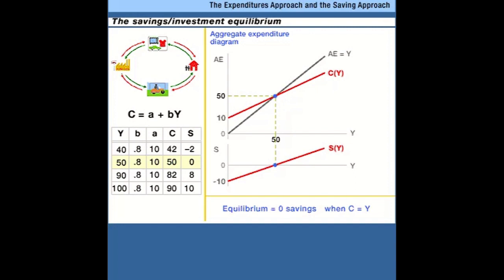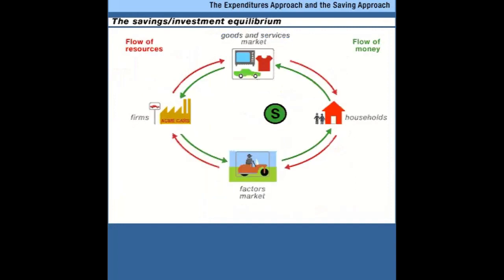Let's now introduce savings more deliberately into the model and think about how savings really work in the macroeconomy. Going back to our circular flow diagram, savings are a leakage out of the system — money that consumers could be spending on goods and services but instead are choosing to put in the bank. Now who's going to use this savings? If there's a positive amount of savings and no one to use it, we'll have disequilibrium. But suppose businesses acquire consumer savings and spend it on plant and equipment — so-called investment spending.